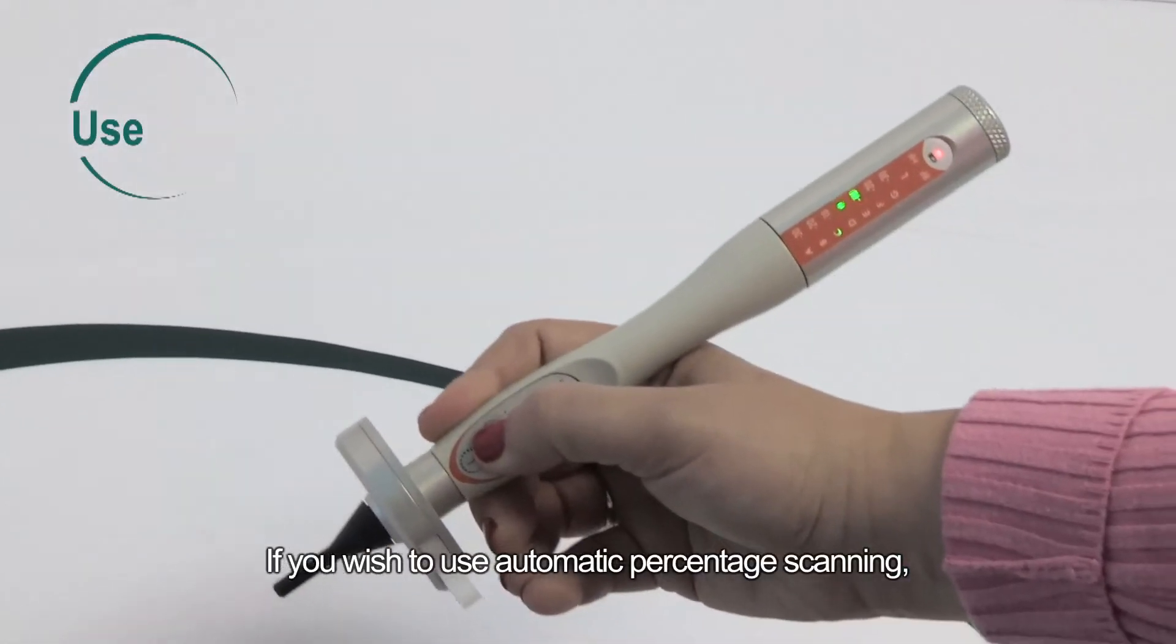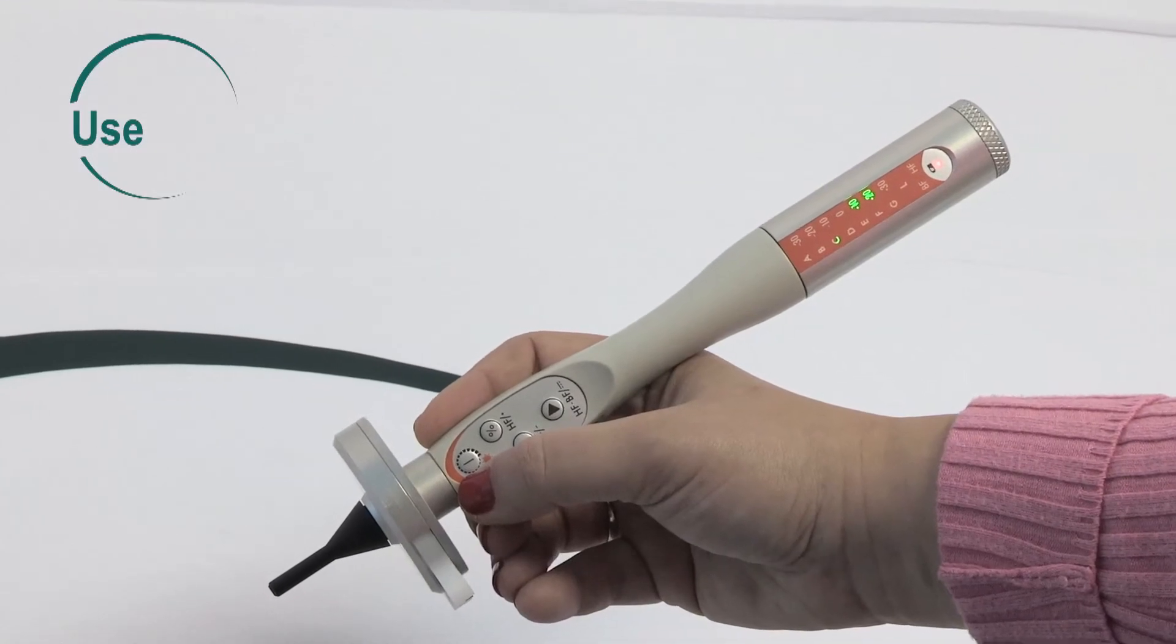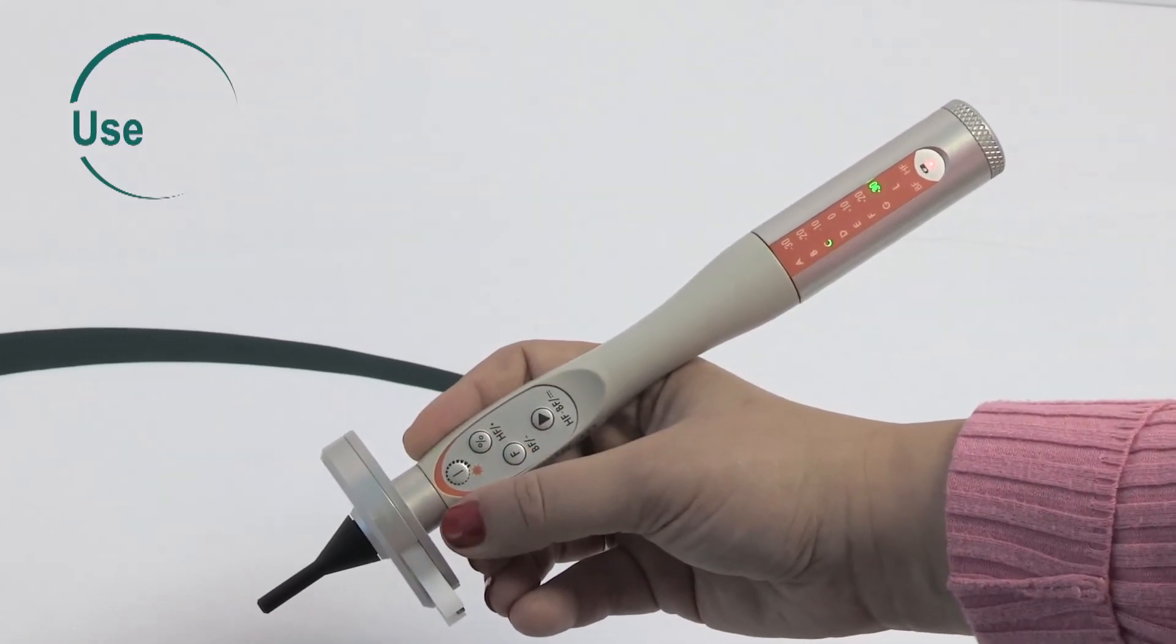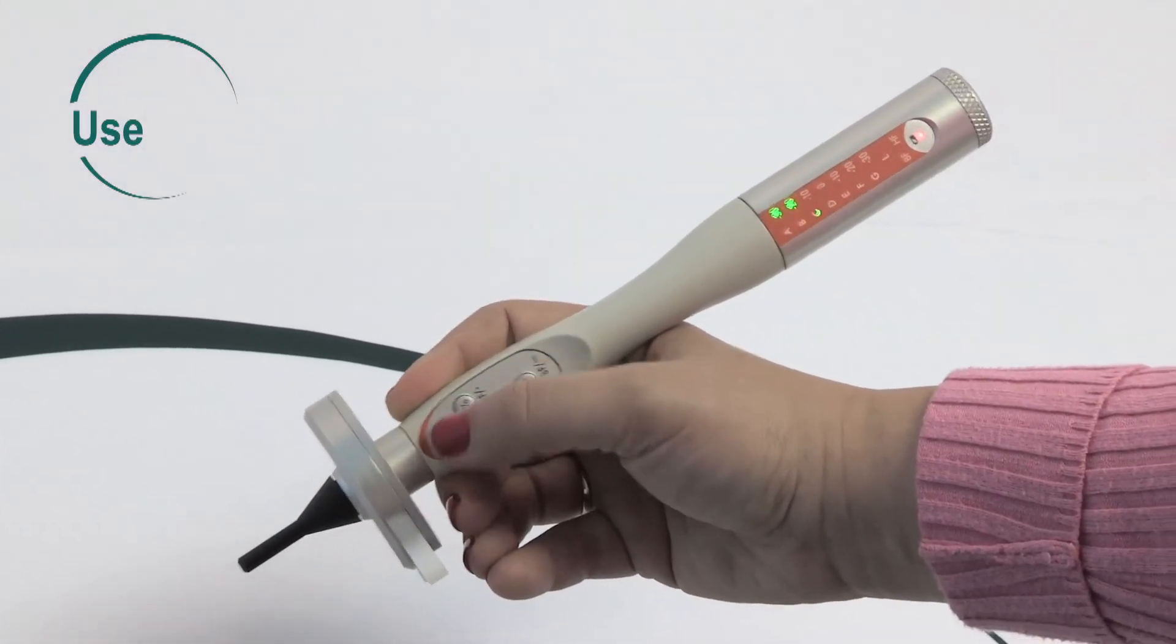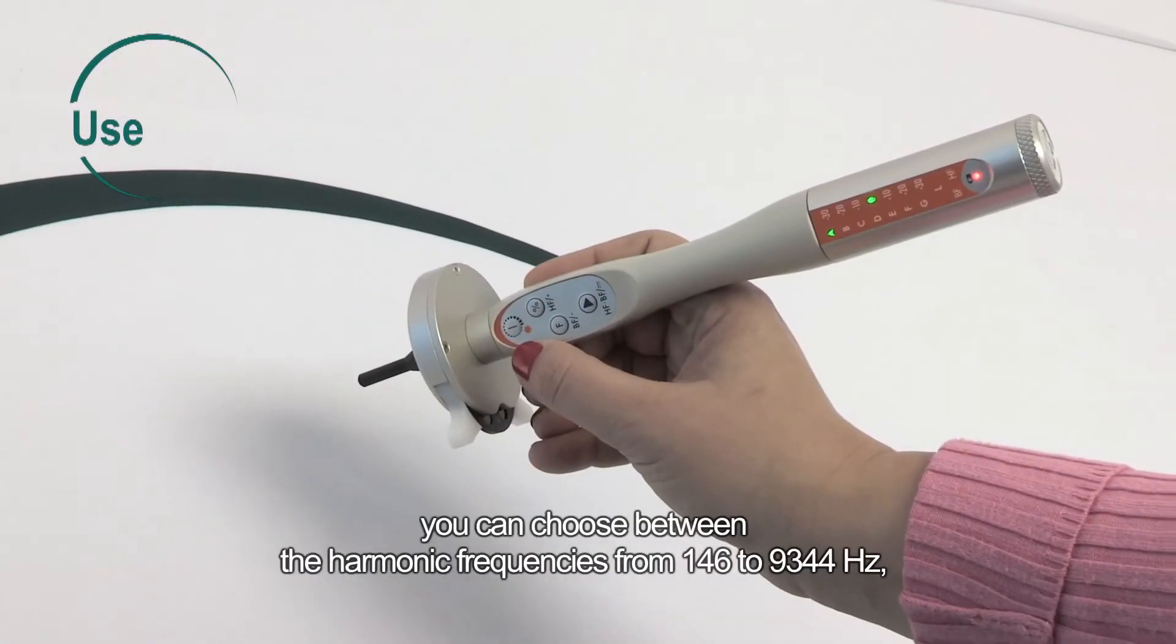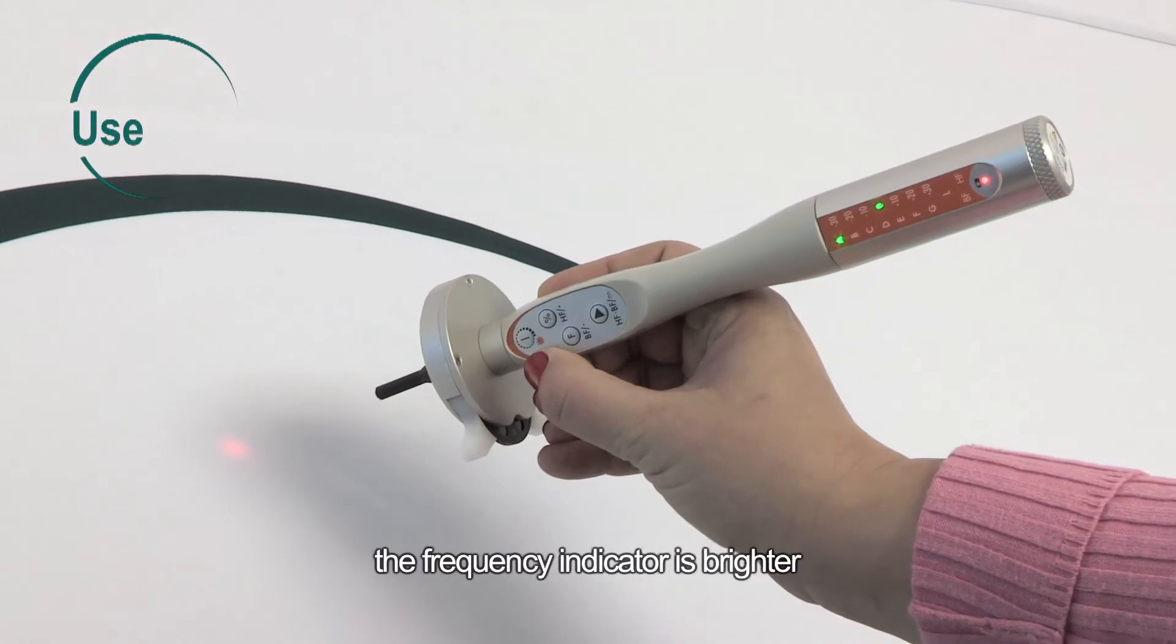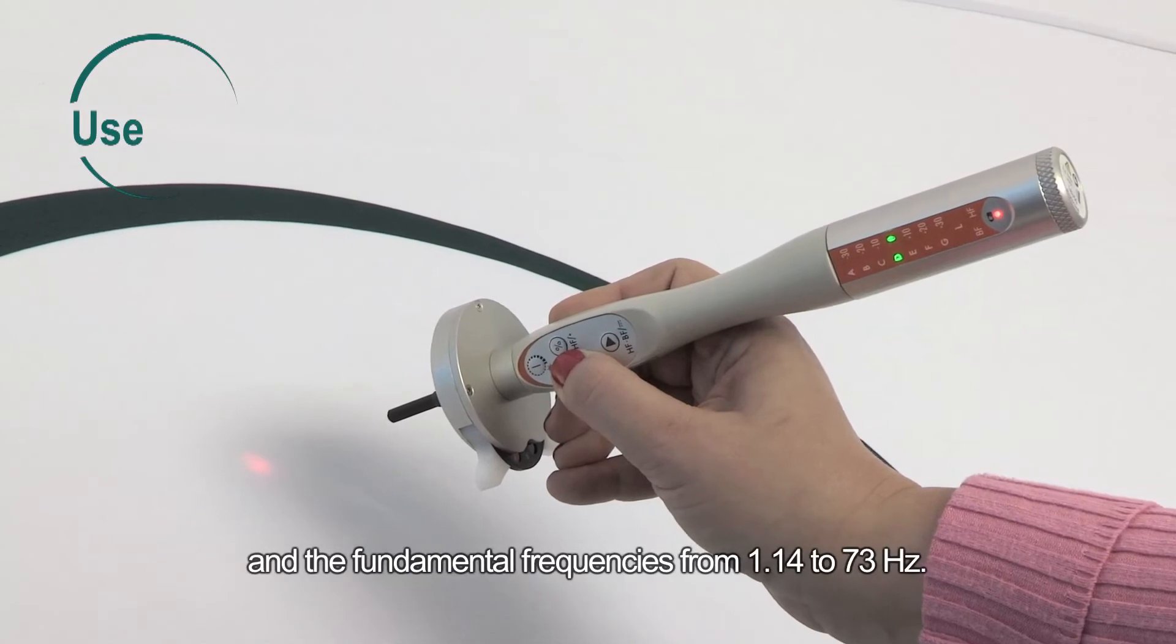If you wish to use automatic percentage scanning, press the percent button and hold for two seconds. To stop the percentage scanning, press the percent button again. By pressing the F button for three seconds, you can choose between the harmonic frequencies from 146 to 9,344 hertz, when the frequency indicator is brighter, and the fundamental frequencies from 1.14 to 73 hertz.